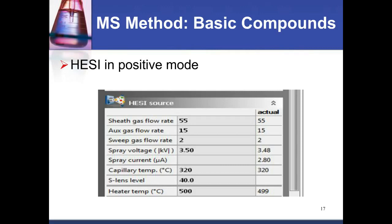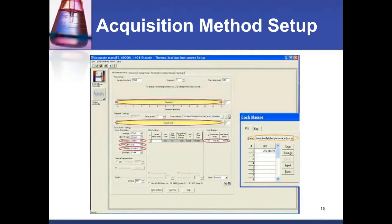We do see some challenges when looking for compounds that produce a negative ion. But because of polarity switching capability, we can set up segments to switch polarity at the appropriate time to detect those target analytes with better sensitivity. For the few compounds appearing in negative mode, we can switch the instrument polarity and detect them very readily.